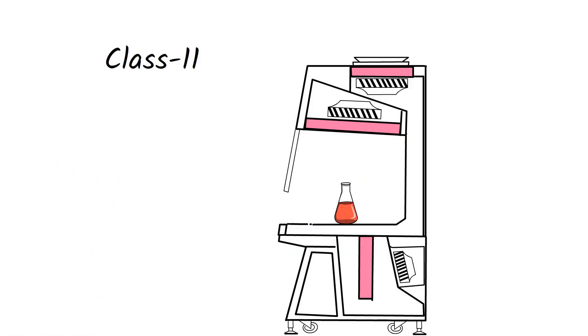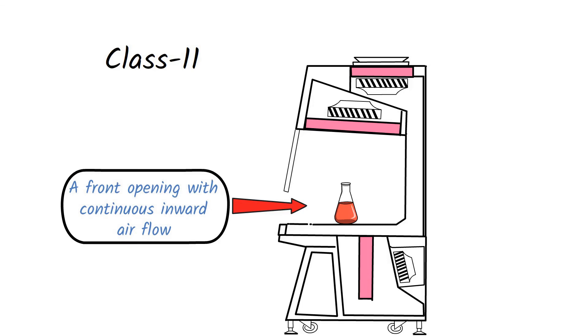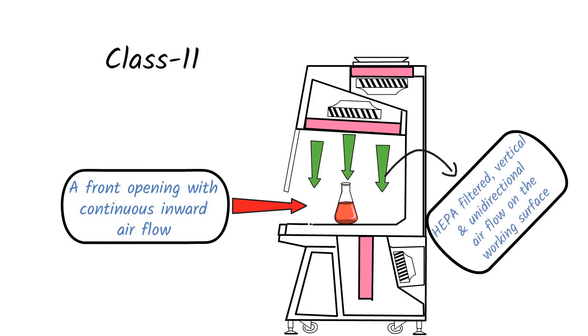The Class 2 biosafety cabinets provide the following: a front opening with continuous inward airflow, HEPA filtered, vertical, and unidirectional airflow on the working surface, and HEPA filtered air to the surrounding area.